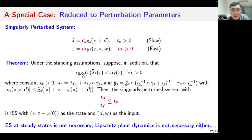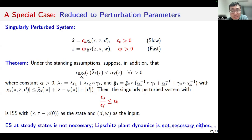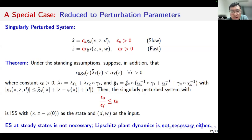I think this condition is quite meaningful because GS is basically the magnitude of the slow dynamics, and lambda_f basically represents the influence of the slow dynamics to the fast dynamics. And R_alpha_f is basically the dissipation term of the fast dynamics. This condition means that we should find the constant C0 small enough so that the influence of the slow dynamics to the fast dynamics can be dominated by the dissipation term of the fast subsystem. We do not assume exponential stability at steady states. We don't assume Lipschitz continuity on the plant dynamics.